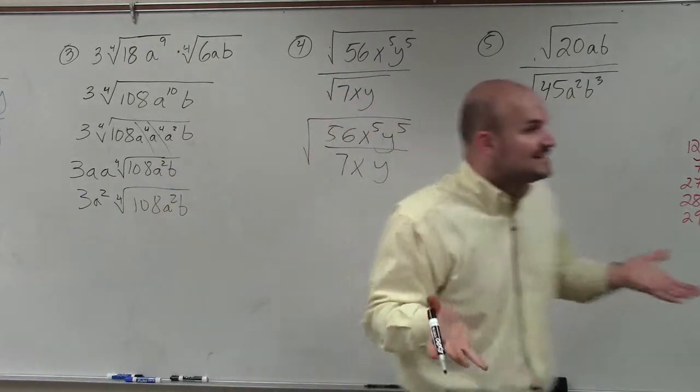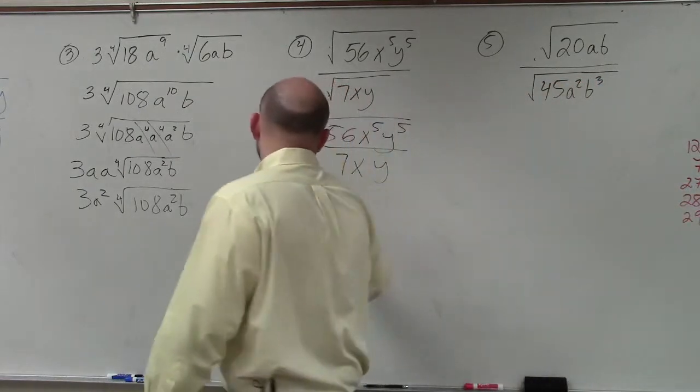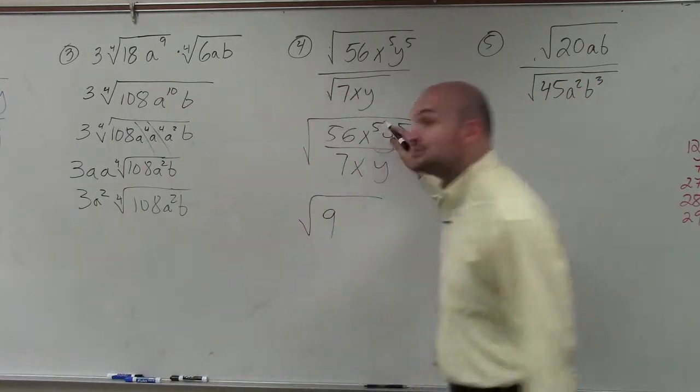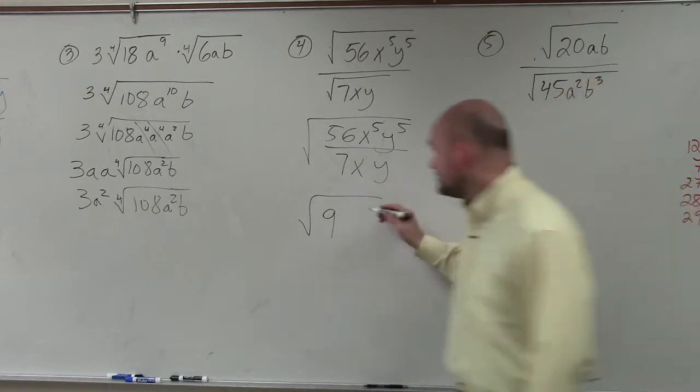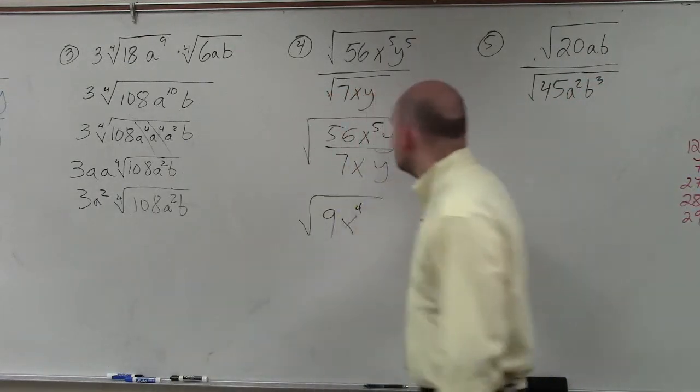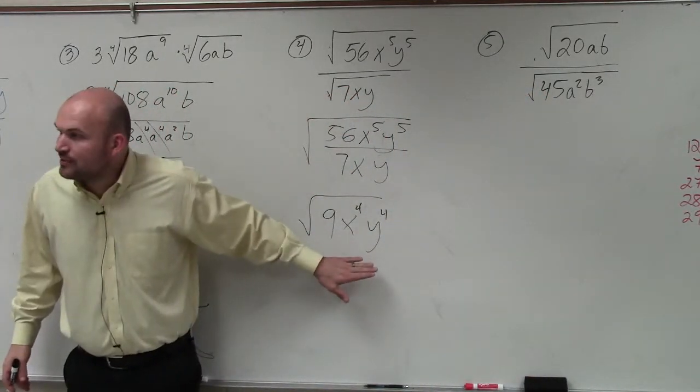So let's divide them. 7 divides into 56 how many times? 9. x to the 5th divided by x is x to the 4th. y to the 5th divided by y is y to the 4th. Now I've divided them into a single expression.